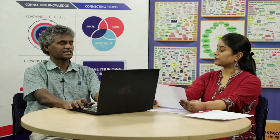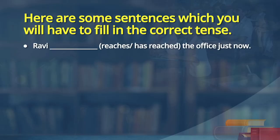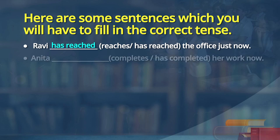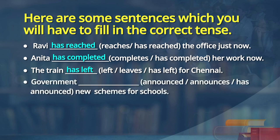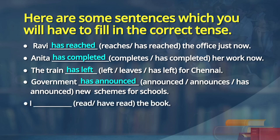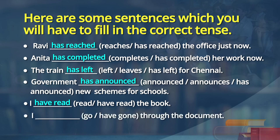Now I am going to read out sentences and you will fill in the blanks with appropriate usages. 'Ravi reaches or has reached the office just now' — Ravi has reached the office just now. 'Anita completes or has completed her work now' — Anita has completed her work now. 'The train left, leaves, or has left for Chennai' — the train has left for Chennai, just now. 'The government announced, announces, or has announced new schemes for schools' — the government has announced new schemes for schools. 'I read or have read the book' — I have read the book. 'I have gone through the document.' All these refer to an action that has just taken place — that is present perfect.